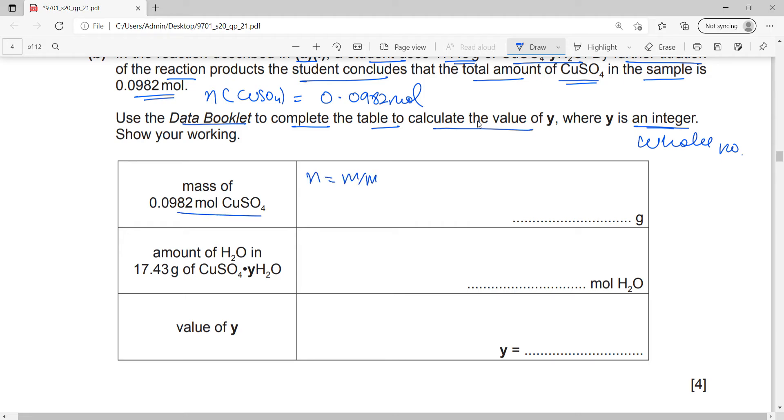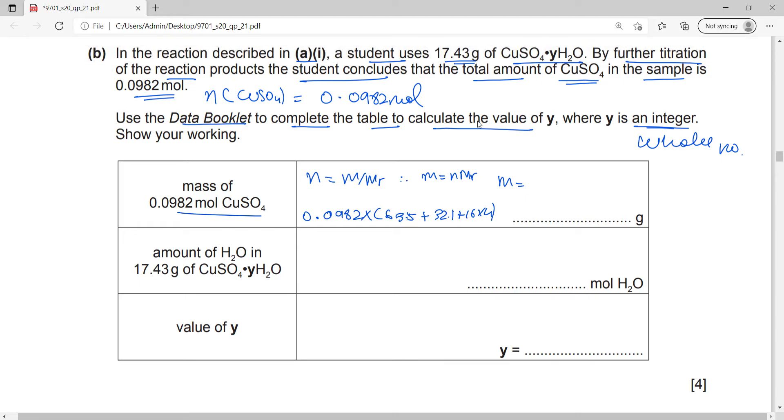The mass of this copper sulfate: n equals M by MR, therefore M equals n times MR. We have moles 0.0982 times the MR. Copper is 63.5 plus 32.1 of sulfur plus 16 times 4. The mass of just copper sulfate alone is 0.0982 times 63.5 plus 32.1 plus 16 times 4. The mass here is given in 4 significant figures, so we write this answer in 4 significant figures: 15.67.